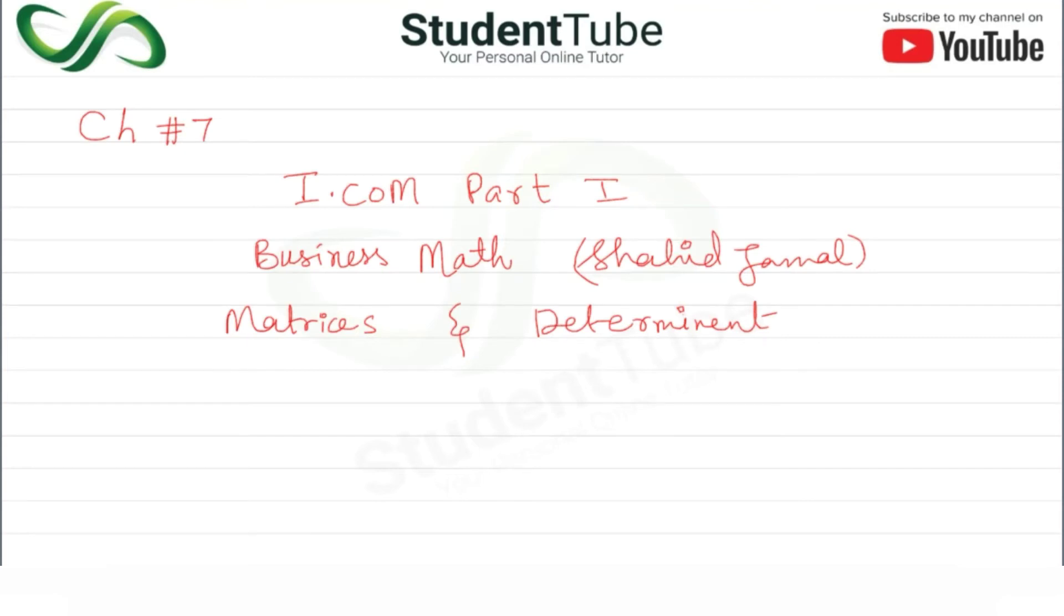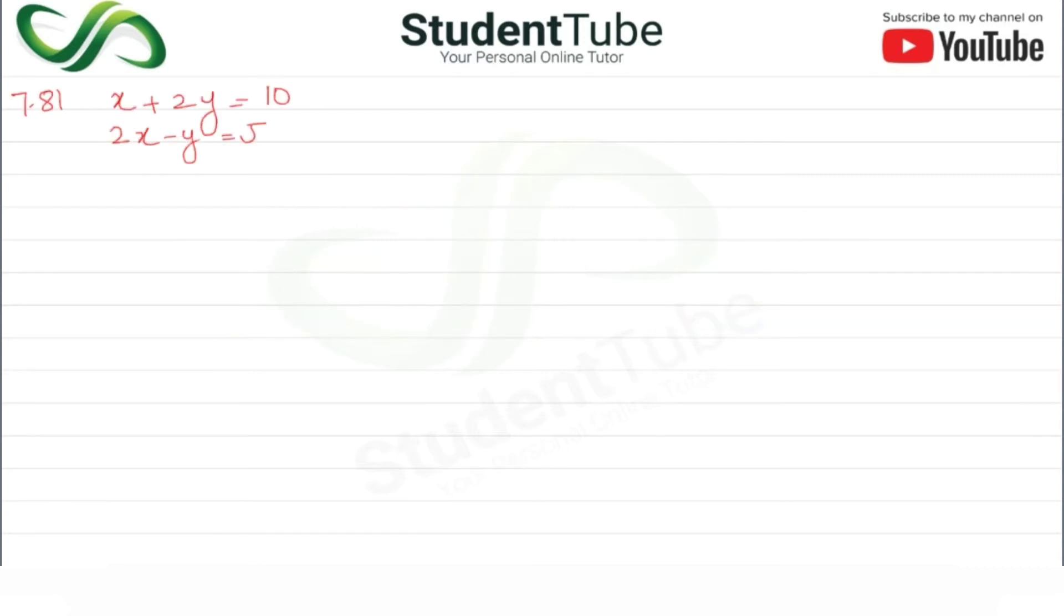Assalamualaikum, welcome to Student Tube. Today's lecture is Chapter 7, Part 1, Business Math book by Shahir Jamal. The chapter is Matrices and Determinants. The question is: x plus 2y equals 10, and 2x minus y equals 5. We have to solve it using Cramer's rule.